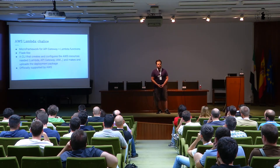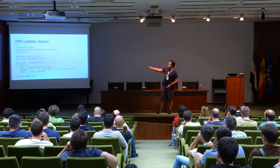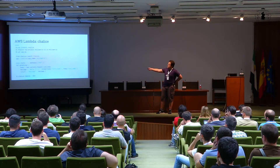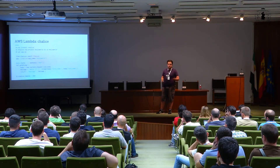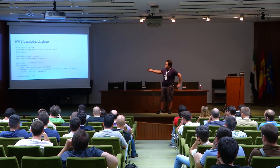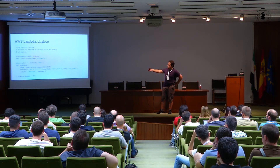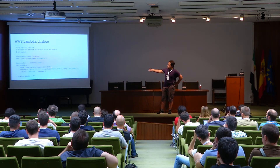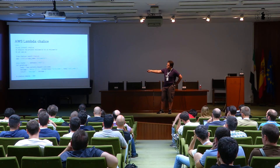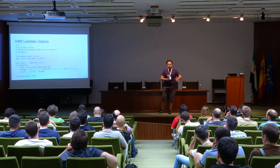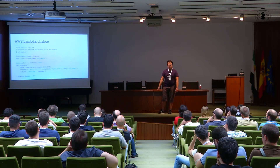It's not easy to manage those packages and their lifecycle, so there are many frameworks available to make your life easier. One of them is Chalice. Chalice is a micro-framework for managing Lambda functions and the API gateway. It is Flask-like — you may see the code and it's similar to the Flask API. It also incorporates a CLI that creates and configures your AWS resources for you — not only the Lambda functions, but the API gateway, the IAM roles — and also packages the code and requirements and uploads them. It's officially supported by AWS.